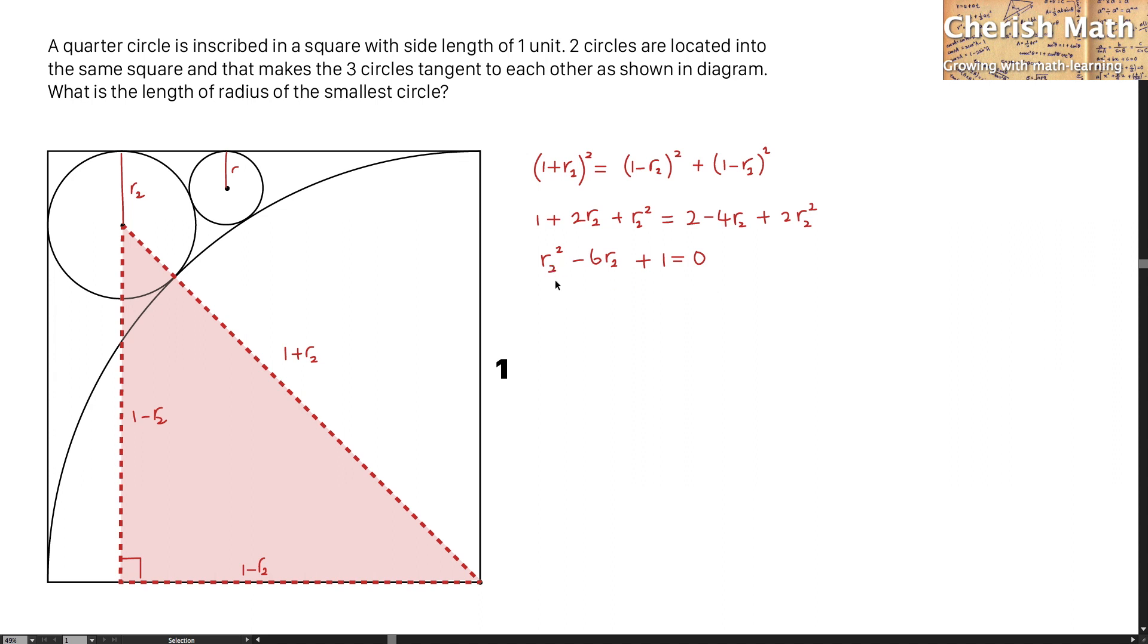I will have to find for what is the value of the R2 now by using the quadratic formula. Now, I'm going to simplify it and this is how it looks like. Now, the value of the R2 has to be smaller than 1 since the side length of the square is actually 1.